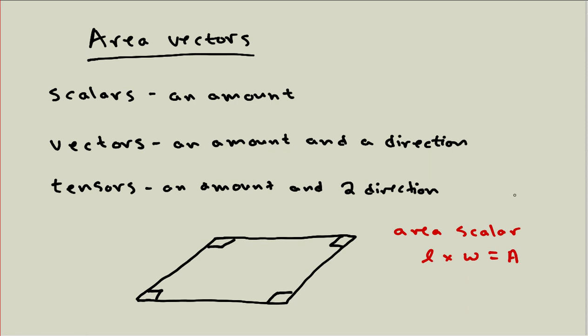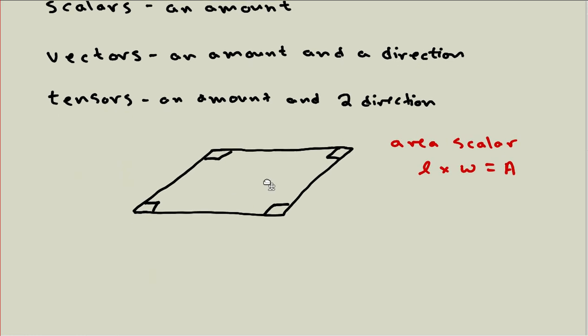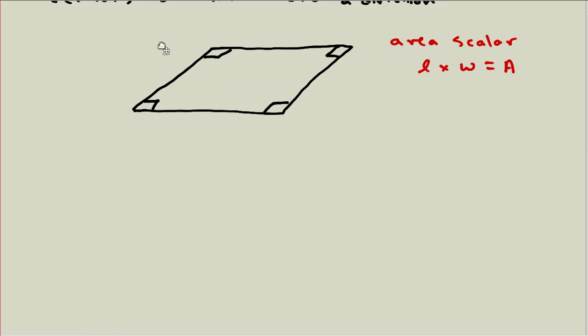We haven't really given any reason up to this point that you should think an area should have a direction associated with it but we could associate some directions with an area. So for example imagine that I wanted to distinguish this area that I just drew from the same thing turned sideways. Well that is a different shape, I mean it's the same basic shape but it's in a different orientation so we can make a distinction between these things. So the question then is how can we go about representing that difference?